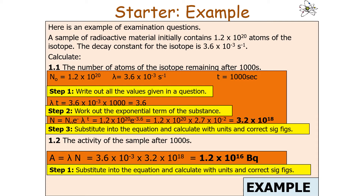For the activity after 1,000 seconds, use activity equals lambda N. Substituting the decay constant 3.6 × 10⁻³ and the number of nuclei calculated previously, 3.2 × 10¹⁸, gives an activity of 1.2 × 10¹⁶ Becquerels.